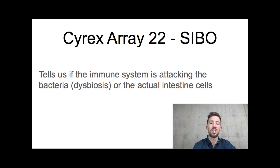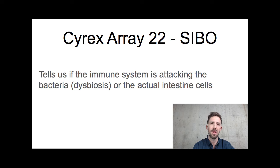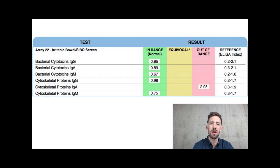Another test in the gut is a SIBO panel. SIBO isn't necessarily autoimmune, but this test can tell us if there's an autoimmune component to SIBO. SIBO can be detected through a breath test, or indicated through an organic acids test, though not definitively diagnostic. This test can tell us if the immune system is attacking the bacteria or the cells themselves. In this case example, there's no attack on cytotoxins, but there is an attack on cytoskeletal proteins — meaning the actual structure of the gut cell itself is being damaged, causing tissue destruction of those gut cells.